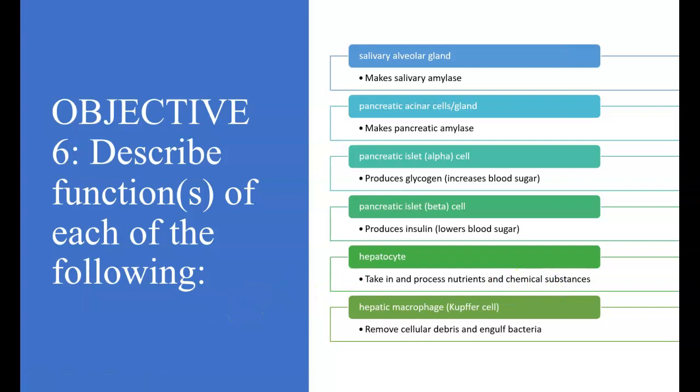Going to objective six, describe the function of each of the following. These are going to be the different glands and cells that exist in the digestive tract. So, the salivary alveolar gland is going to make salivary amylase, which will help start the process of breaking down carbohydrates. Pancreatic acinar cells, or glands, are going to make pancreatic amylase, again, to help start breaking down carbohydrates.